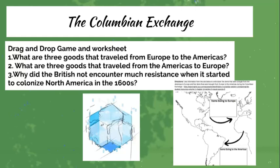We'll be seeing which items were going to Europe and which ones were going to the Americas. The three primary questions are: What are the three goods that traveled from Europe to America? What were the ones from the Americas to Europe? And why did the British not encounter much resistance when they began to colonize North America in the 1600s — what were the benefits and disadvantages?